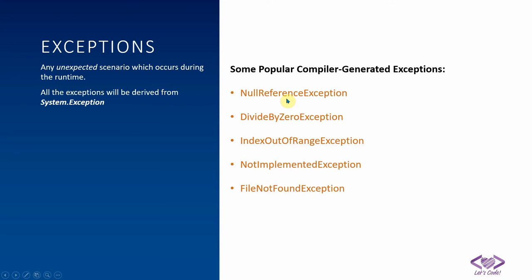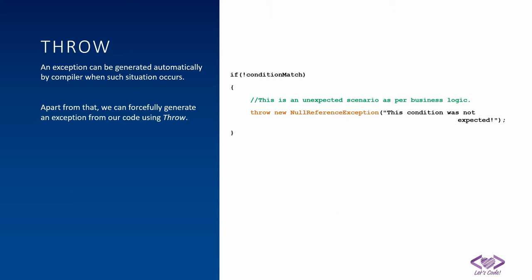For example, NullReferenceException is thrown when you access an object which is null and has not been initialized. DivideByZeroException occurs when you divide any number by zero. IndexOutOfRangeException occurs when you try to access, say, the eighth element of an array that only has five elements. Apart from compiler-generated exceptions, you can also throw exceptions forcefully using the throw keyword — for example, throw new ExceptionType(parameters).